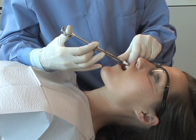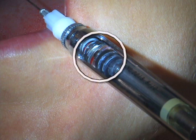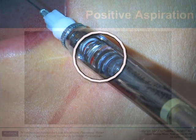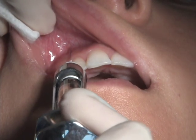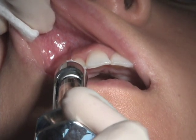If aspiration is positive, assess the amount of blood that has entered the cartridge. If there is just a small trickle, re-aspirate, and if negative the second time, continue with depositing. If the cartridge is clouded with blood and you are unable to ascertain whether the second aspiration is negative, the clinician must change the cartridge and either replace the needle or expel a bit of solution to clear any hemorrhage in the lumen. Then re-inject. Explain the situation to the patient in a calm, composed manner.